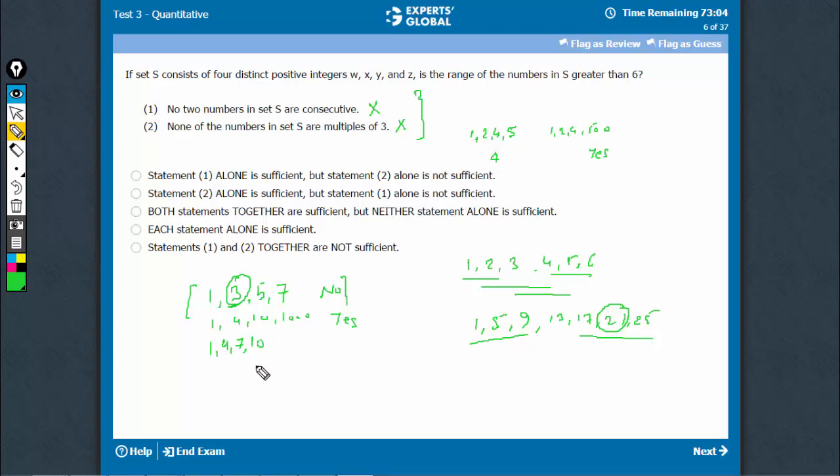You see, the range suddenly becomes 9. There'll be cases when I think it can be 8 also, but it will always be greater than 6. The range will always be greater than 6. So, at least one term would have to be avoided. So, combining it works, we get the answer yes. C is the right choice.